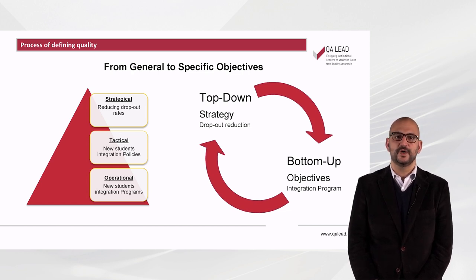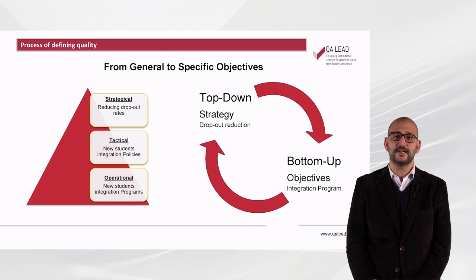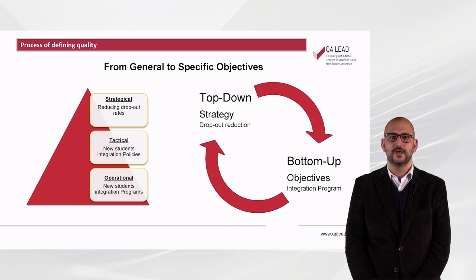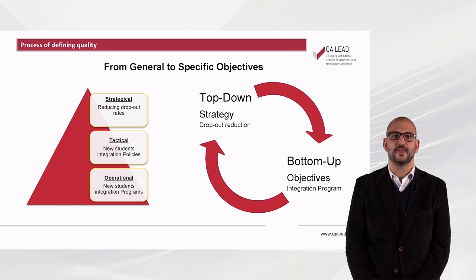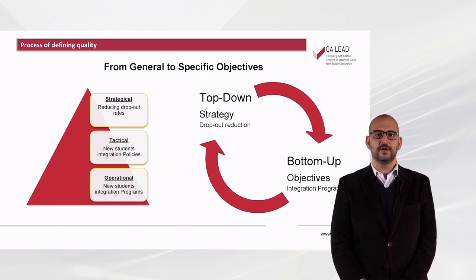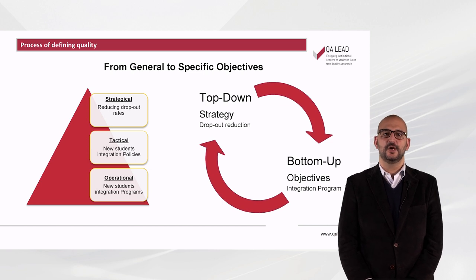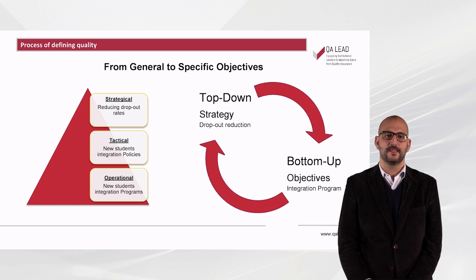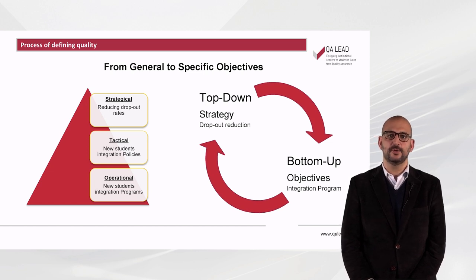At a strategic level, where the strategic objective is defined — going back to the previous example, reducing dropout rates. At a tactical level, where the policies to meet the strategic objectives are set — for example, new students' integration policies. At the operational level, where the procedures are established — one can give as an example new students' integration programs.